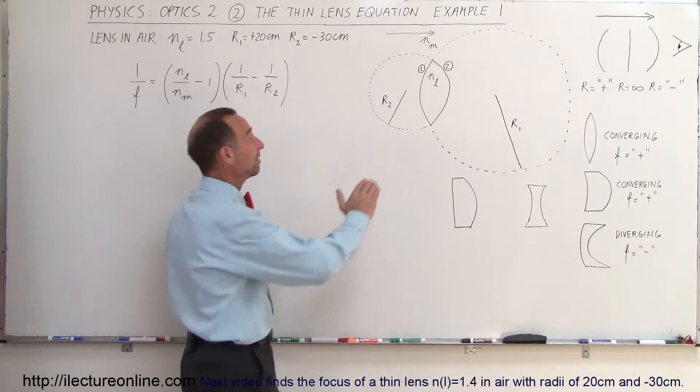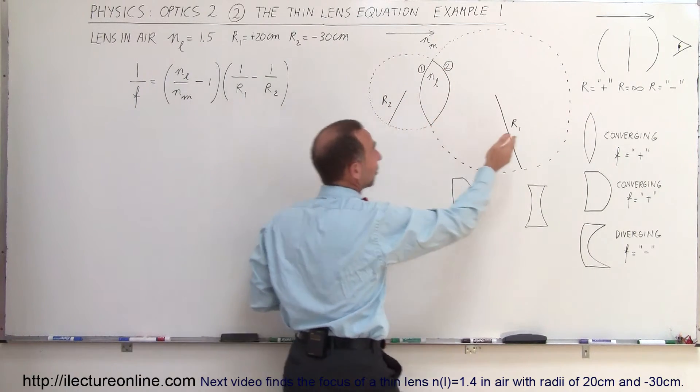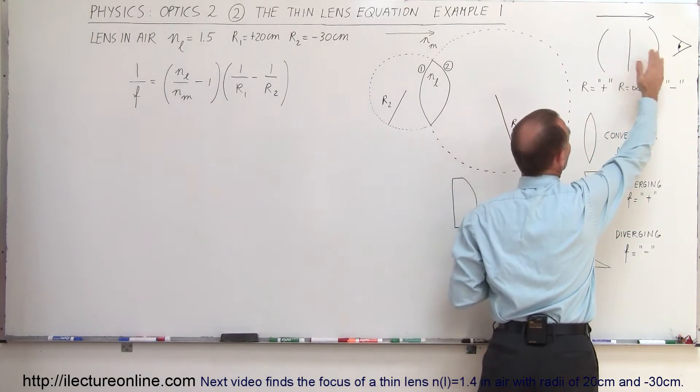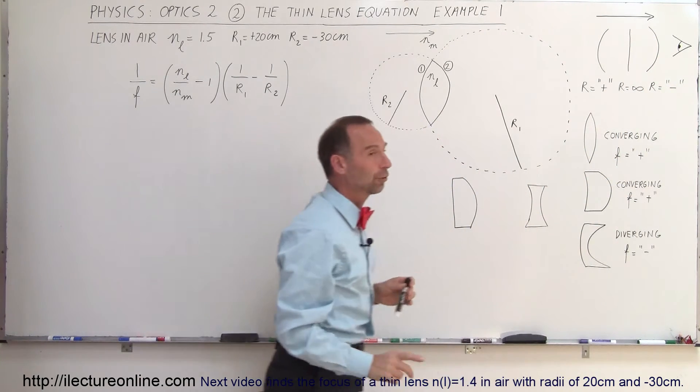What does minus 30 centimeters mean? Well, it means that it's bent to the right. The convention for the backside of the lens is that if it's bent to the right, it has a negative radius of curvature.